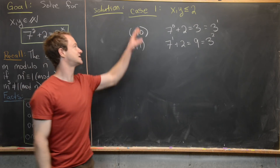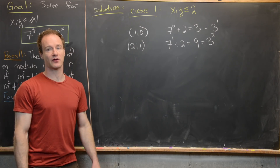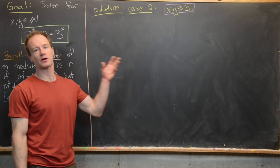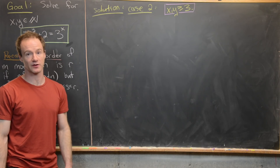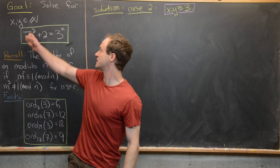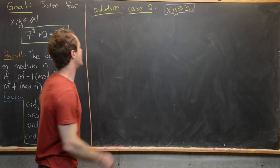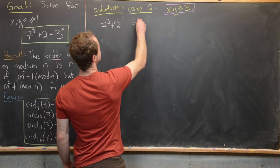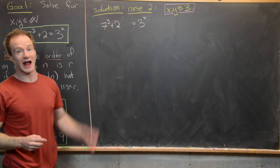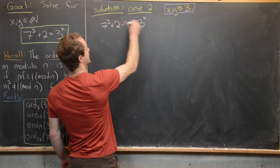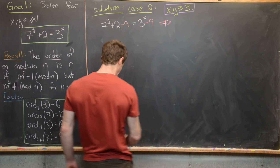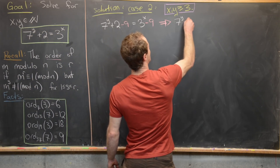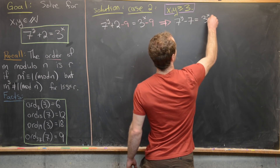Now we move to the case when x and y are greater than or equal to 3. Starting from 7 to the y plus 2 equals 3 to the x, we subtract 9 from both sides, giving us 7 to the y minus 7 equals 3 to the x minus 9.